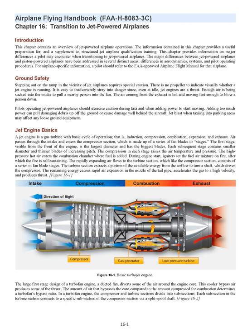Jet engine basics. A jet engine is a gas turbine with a basic cycle of operation: induction, compression, combustion, expansion, and exhaust. Air passes through the intake and enters the compressor section, made up of a series of fan blade stages. The first stage — visible from the front of the engine — has the largest diameter and biggest blades. Each subsequent stage contains smaller, thinner blades of increasing pitch. Compression in each stage raises the air temperature and pressure.